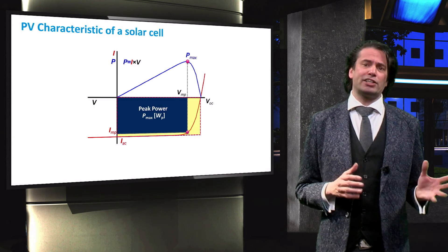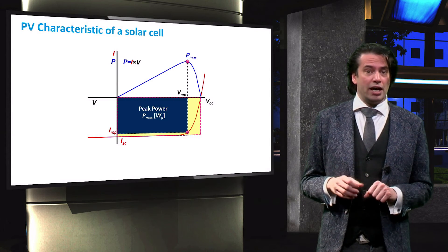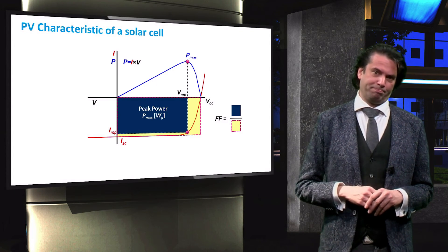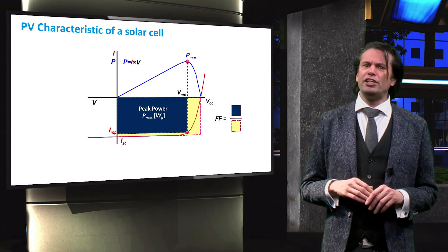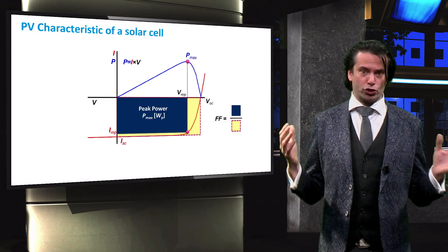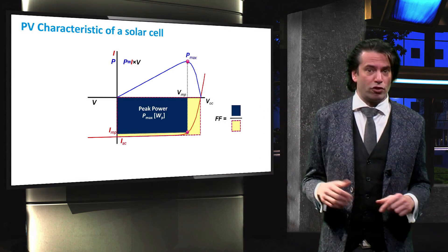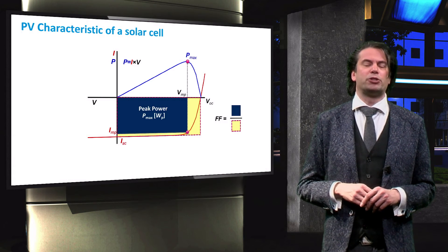We define the ratio of Pmax to the product of VOC and ISC as the fill factor or FF. The fill factor essentially shows the quality of our solar cell. A greater fill factor implies a greater fraction of that theoretical power can be produced.